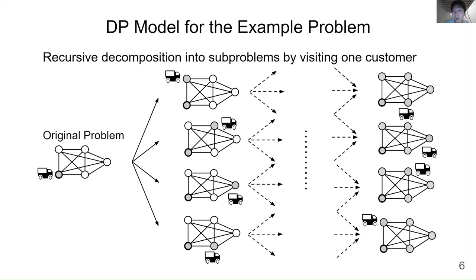To compute the cost of each sub-problem, we need to further decompose it into sub-problems by visiting one more customer. We repeat this procedure until reaching a trivial sub-problem where all customers are visited. Such a sub-problem has the cost of zero.